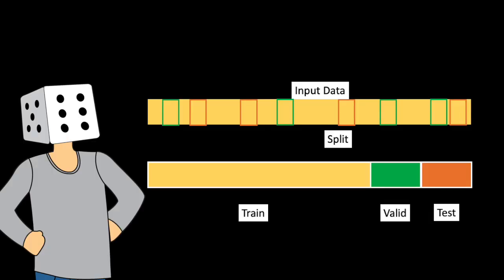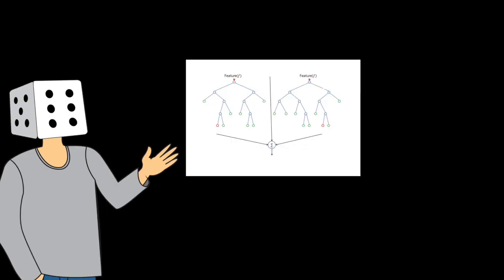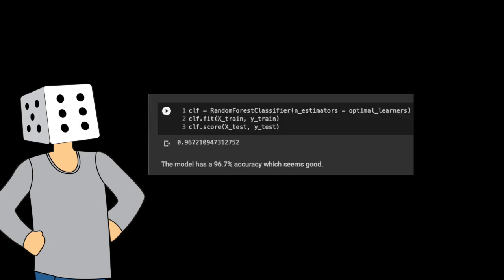Now for the machine learning part, we split the data into testing and training data and we feed it through a classifier model. I used random forest for this example, and boom — 96% accuracy, just like that.